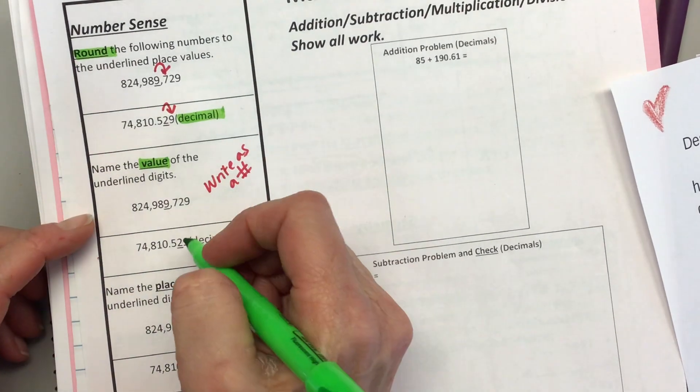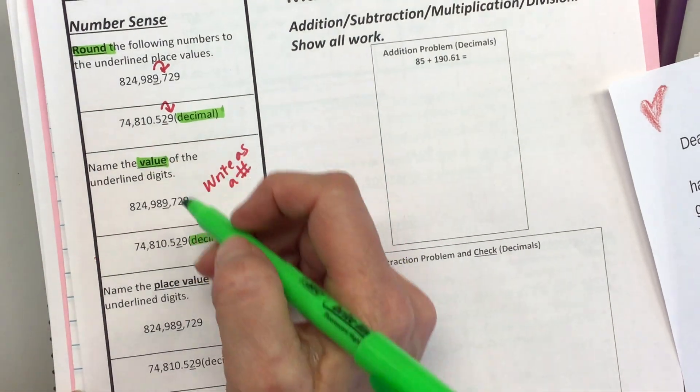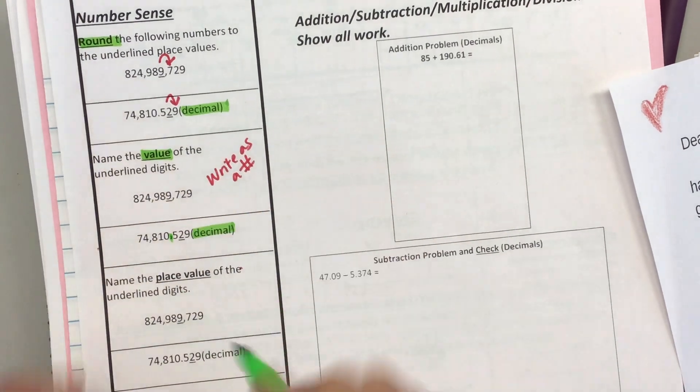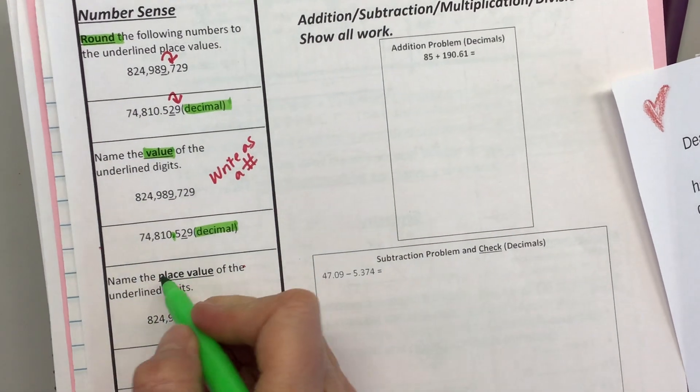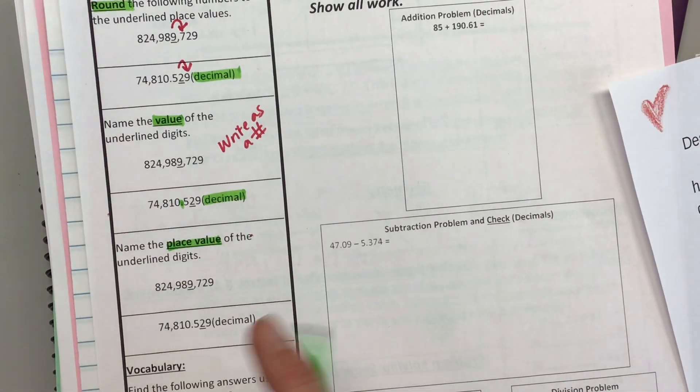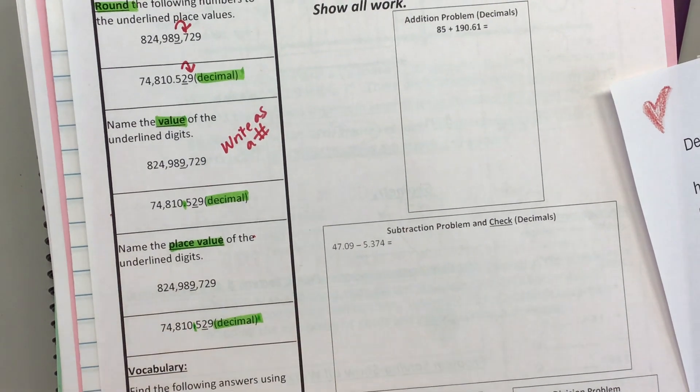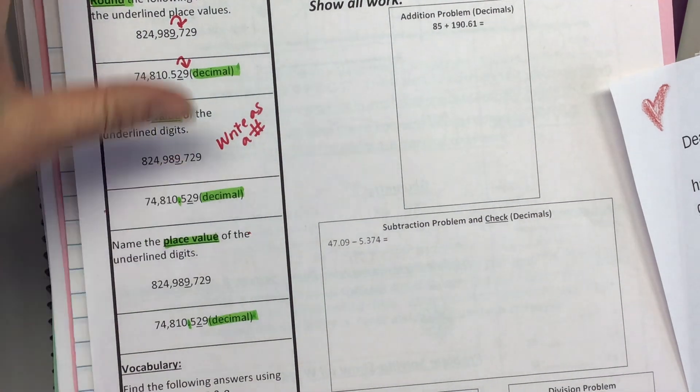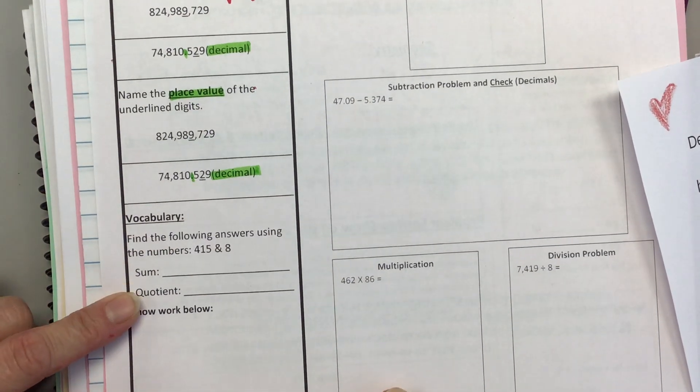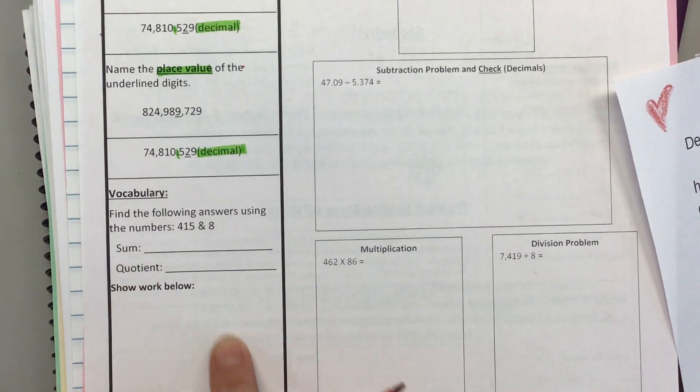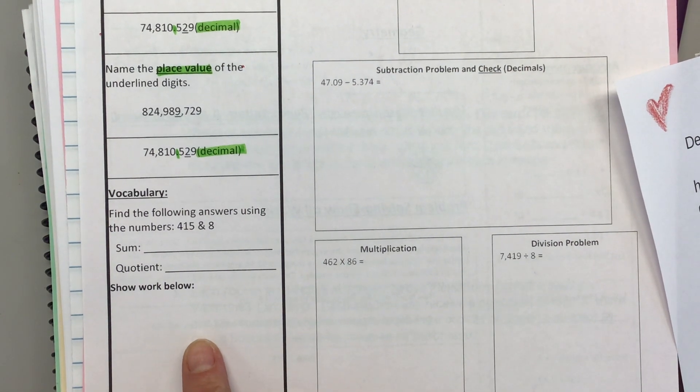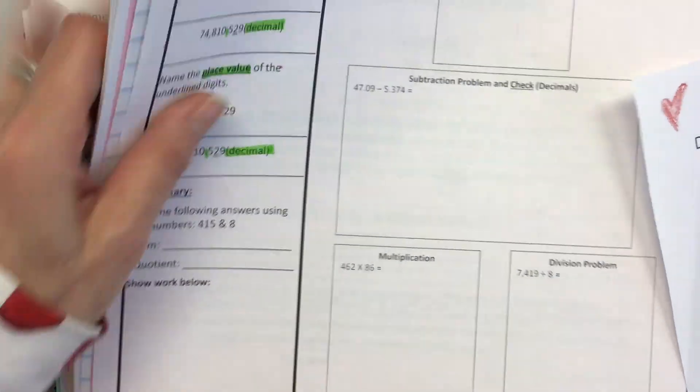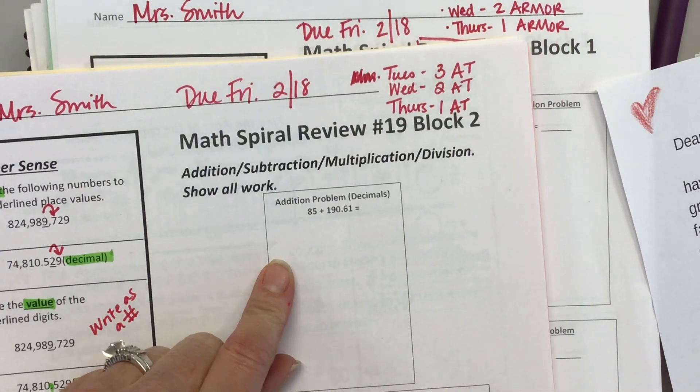Name the value of the underlined digits. This should be written as a number. If you write this as a word, it will get counted wrong. A value is a number. Here is our decimal. We're writing the value of this number. Just note the decimal point. Name the place value of these underlined digits. Again, we need to note the decimal point. And then find the following answers using the numbers 415 and 8. You need the sum and the quotient. There is a place to show your work.